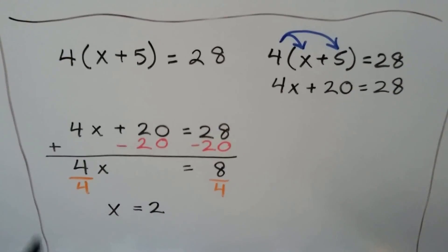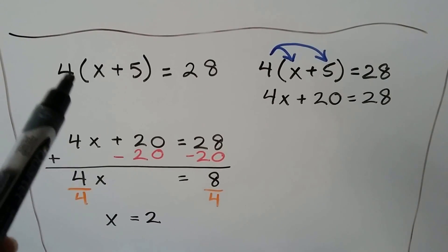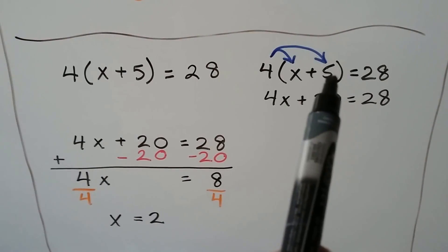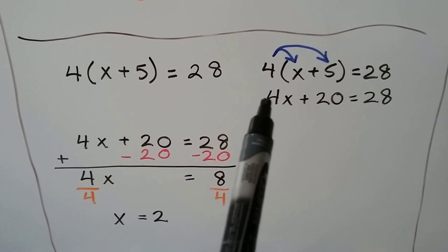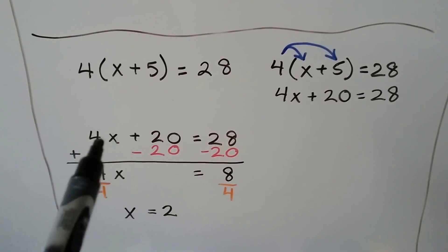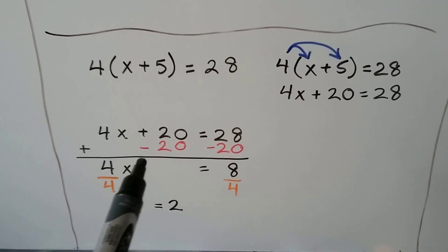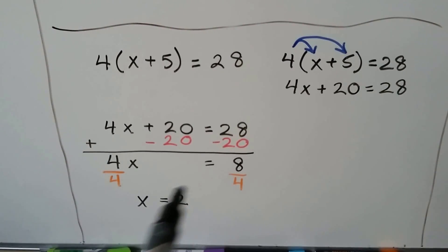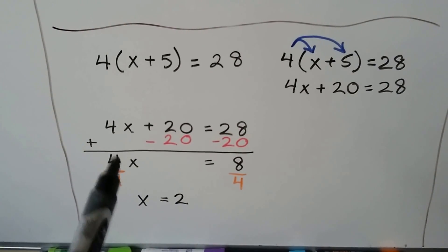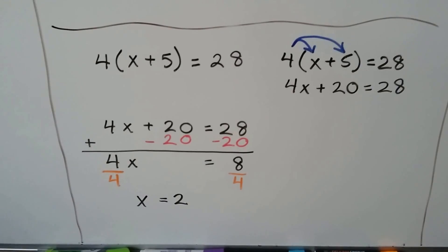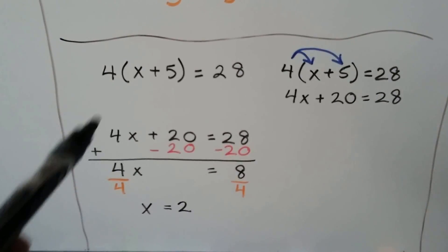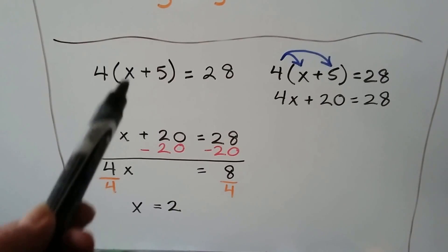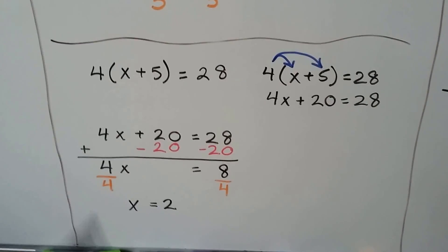Now we've got parentheses. We have to do the distributive property to take care of these parentheses first. So we're going to do 4 times x plus 4 times 5, giving us 4x plus 20 equals 28. Now we can isolate the variable by taking the 20 away from both sides of the equal sign. We're going to end up with 4x equals 8. Divide both sides by the coefficient 4 and we get 1x equals 2. Remember when you see parentheses, you have to do distributive property and follow the sign inside. We can't do inside the parentheses first because we don't know what x is.